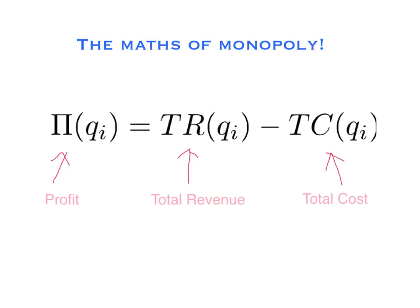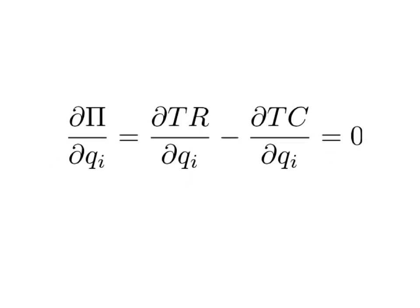We want to find the level of quantity, the level of output for the monopoly that maximizes profits, and we can do that by using a bit of calculus. Let's take the derivative of the profit function with regards to output. We want to maximize profits, so we want to find the point where that derivative is equal to zero — the top of our profit hill.